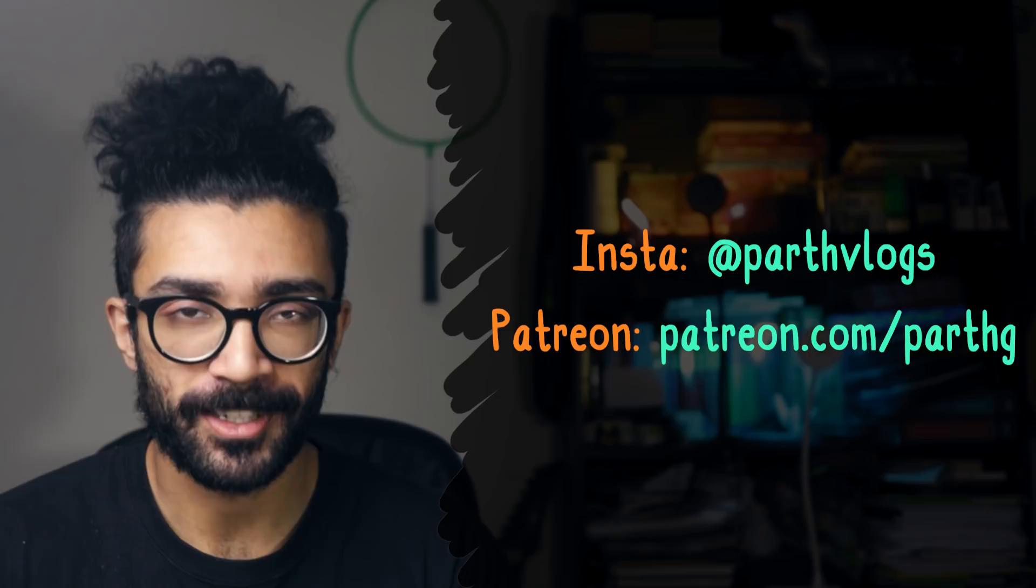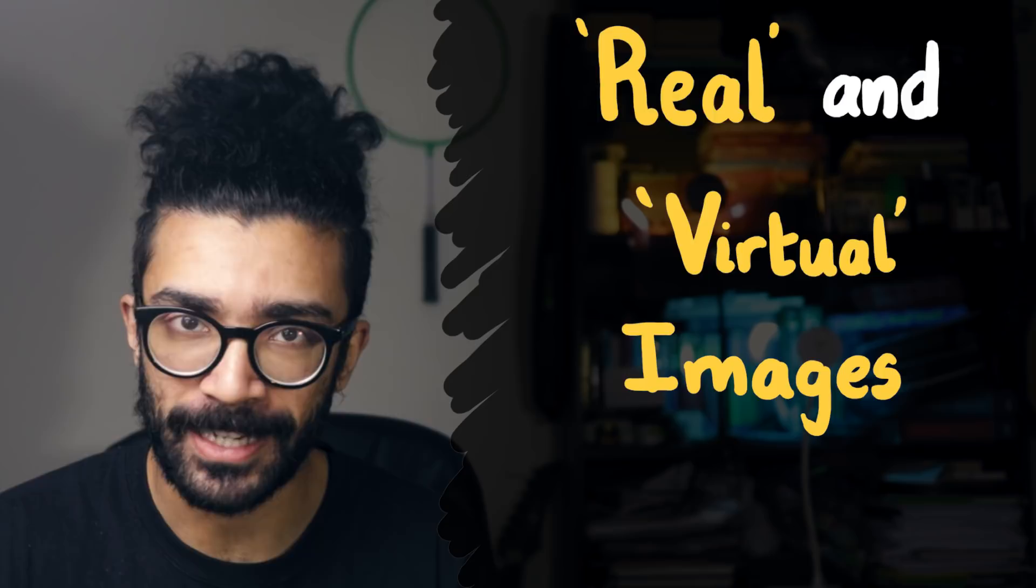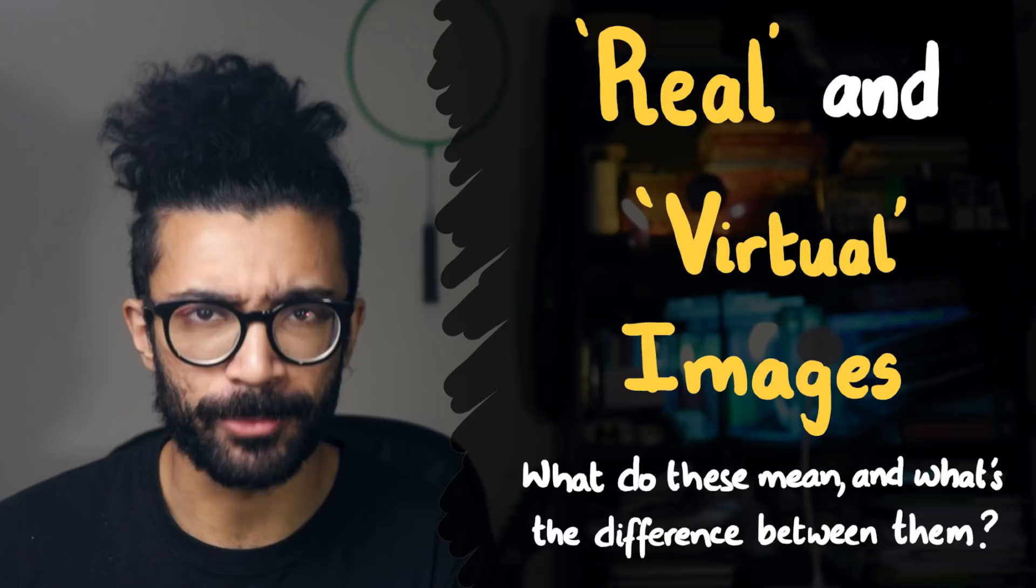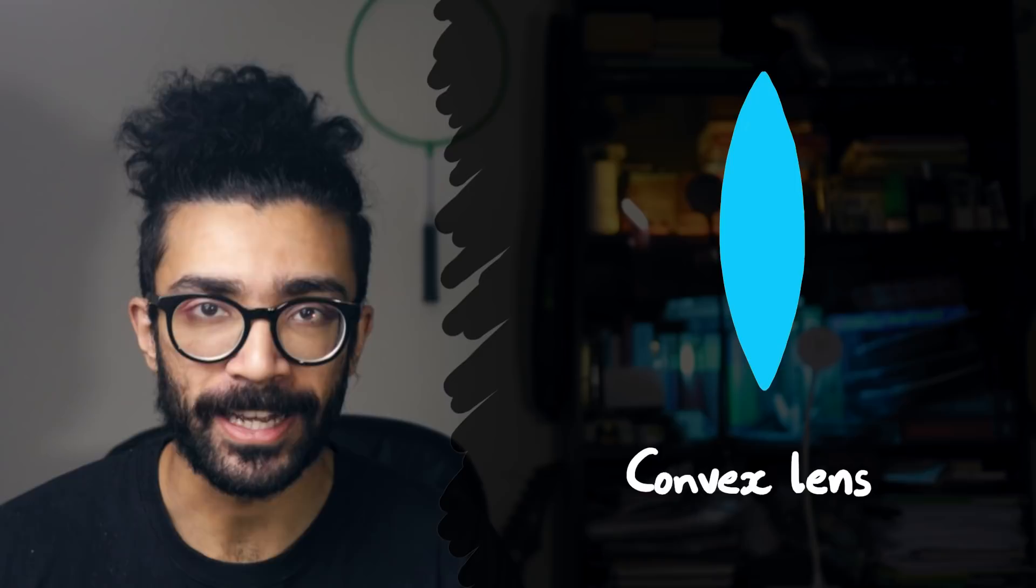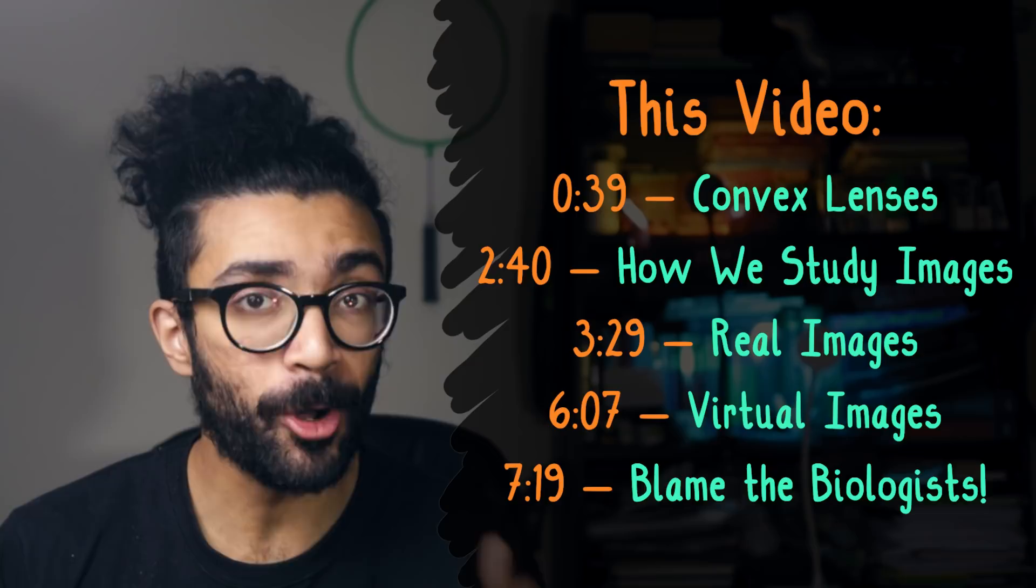When I first started studying optics, I remember finding the concept of real and virtual images quite complicated to get my head around. What did these two terms actually mean and why did we have to differentiate between the two? Well, in order to understand these terms, we will be considering what is known as a convex lens. Now if you're already familiar with how we treat convex lenses in the study of optics and you just want to get to the real and virtual images part, then feel free to skip the first section of this video.